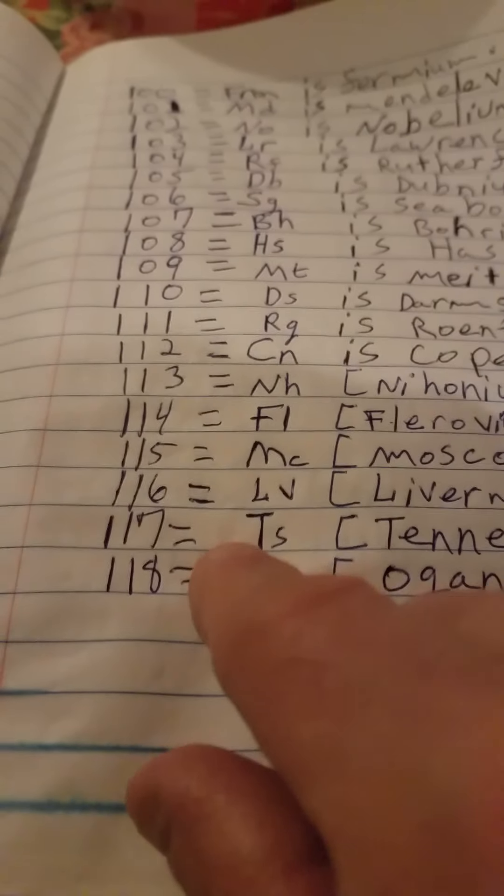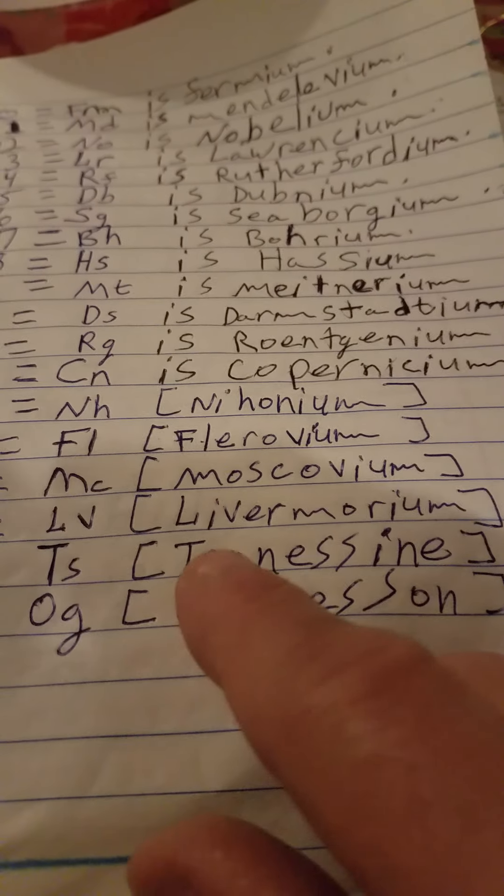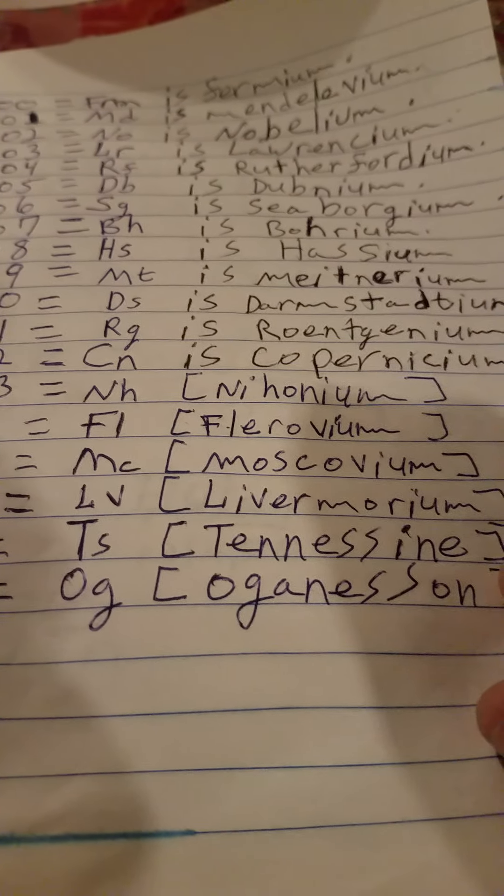Then you got capital TS. Remember Fatso in one of my videos? That's for Tennessine, because it was created and discovered in Tennessee.